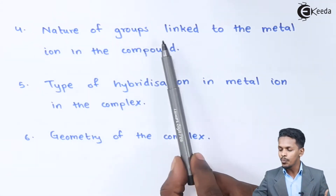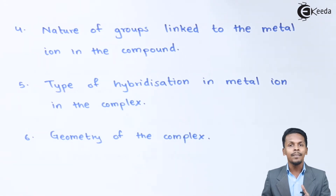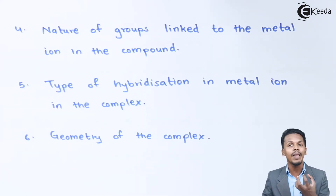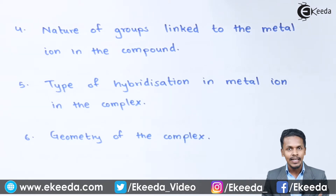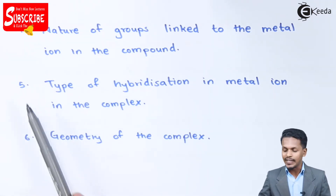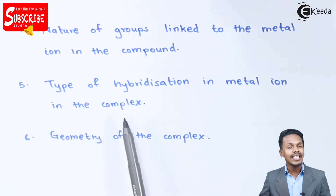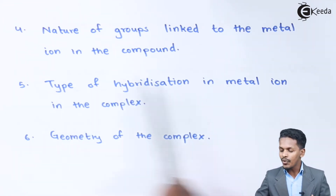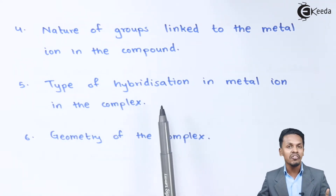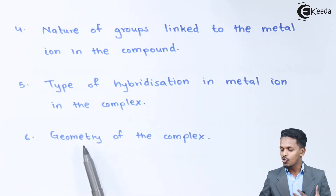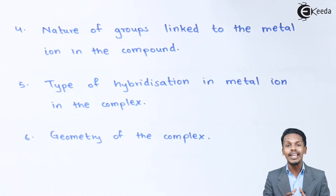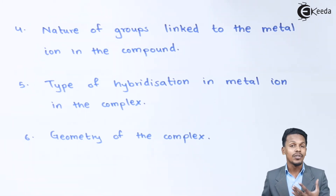Another factor is the nature of the group linked to the metal ion in the compound. Complex or coordination compounds are notably colored because of the metal ion present as a central atom, and if it has unpaired electrons in the d orbital, it will impart a color. The type of hybridization in the metal ion in the complex also affects the color — this will be elaborated in the next topic. Additionally, the geometry of the complex can change the color; the color imparted by the transition metal compound also depends on the geometry of the molecule.